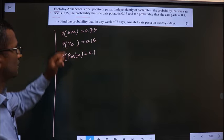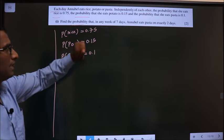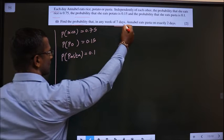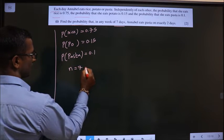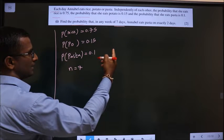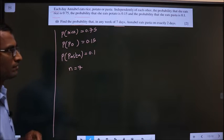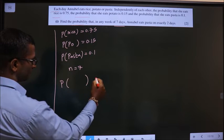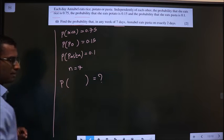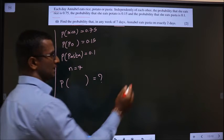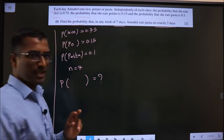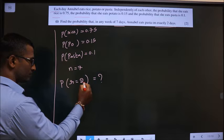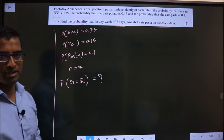Okay, next. Find the probability that in any week of 7 days, so here n will become 7, Annabelle eats pasta on exactly 2 days. So here you need to find the probability of what condition that will be decided by this one. Exactly 2 days, that means R should be 2. Clear so far?